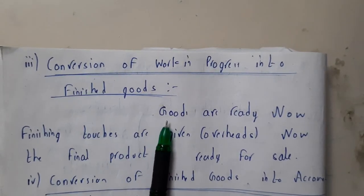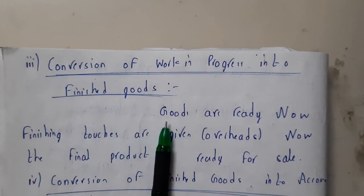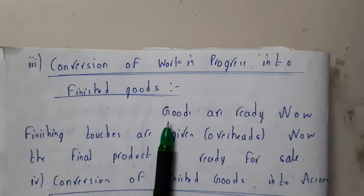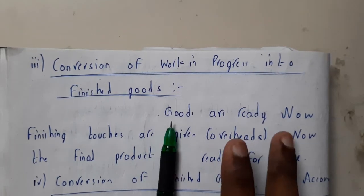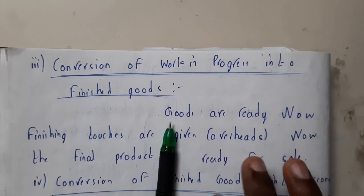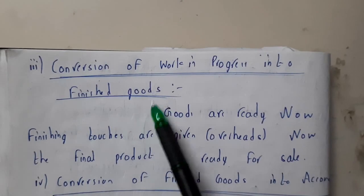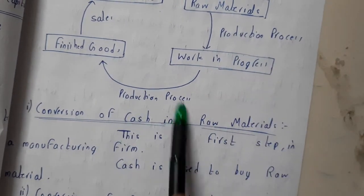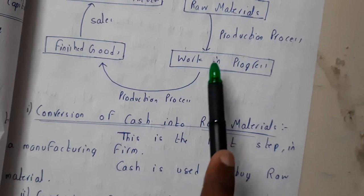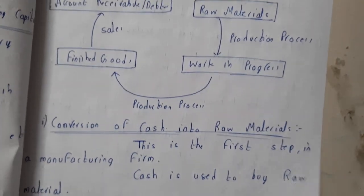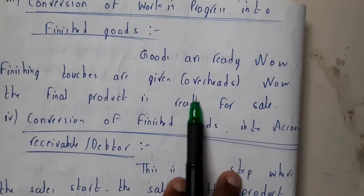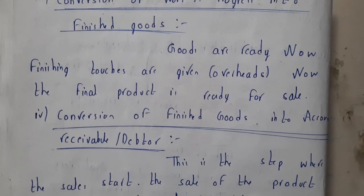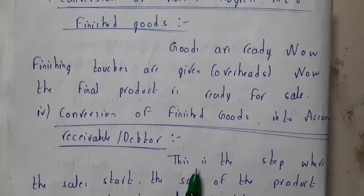For example, in a wood factory, workers cut wood and nail it according to requirements. Then finishing touches are added — polishing, painting, adding plywood — and these come under overheads. Notice that work in progress appears twice in the cycle: raw materials first become temporarily finished goods, and then those are converted into finished goods by applying finishing touches. Once the final product is ready, it goes for sale.